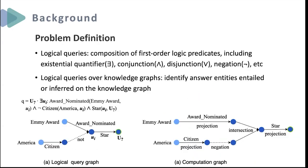Here we focus on the task of answering logical queries on Knowledge Graphs. A logical query means a natural language query can be transformed into the composition of first-order logic predicates, using operators including existential quantifier, conjunction, disjunction, and negation. Answering logical queries on Knowledge Graphs is to identify answer entities that are likely to be entailed by known facts or inferred through generalization. For example, for the question 'What are the movies starring non-American actors who have been nominated for the Emmy Award?' — this question can be transformed into logical queries with first-order predicates as shown in the figure.